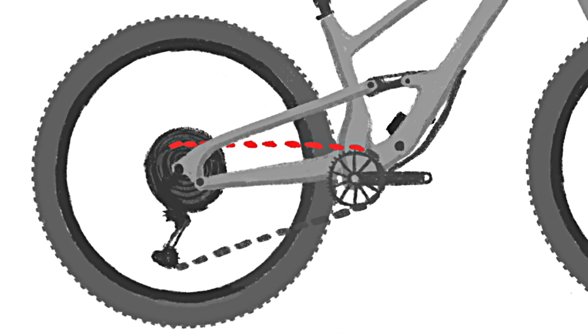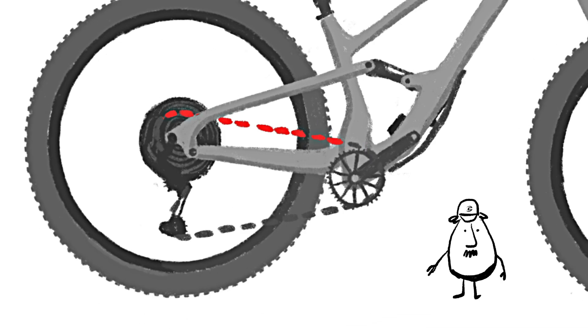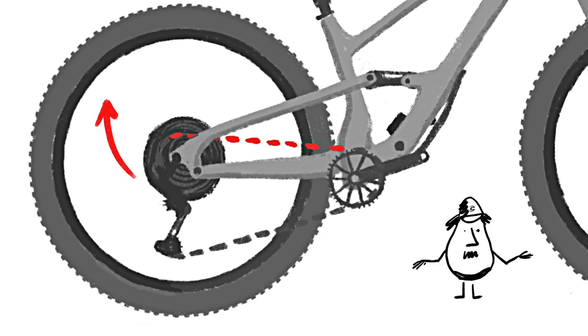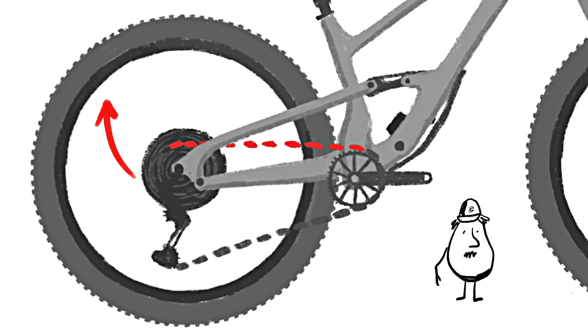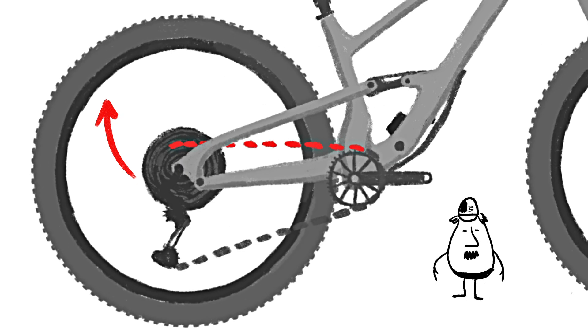But high pivots also come with a nasty side effect: pedal kickback. When the rear wheel follows that lovely rearward arc, it causes the chain to pull the crank backwards like this. Ouch! That is pedal kickback.